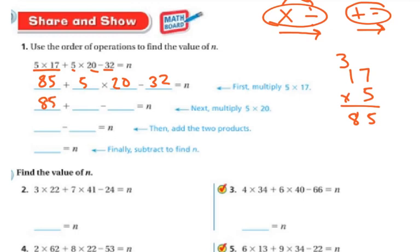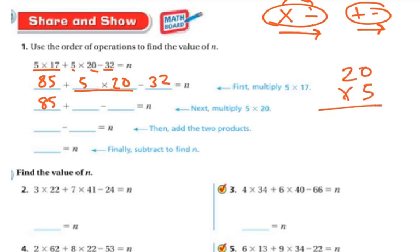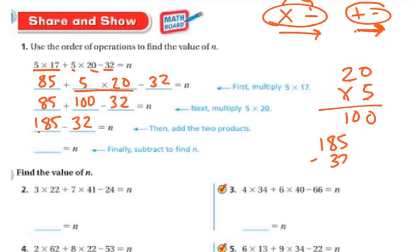Now I'm doing 5 times 20. So 20 times 5: 5 times 0 is 0, 5 times 2 is 10, so that's 100. Bring down my minus 32. Now from left to right for addition and subtraction: 85 plus 100 is 185. Bring down my 32. Now 185 minus 32: 5 minus 2 is 3, 8 minus 3 is 5, and then I have my 1. So the answer is 153.